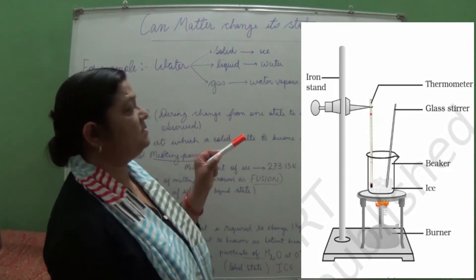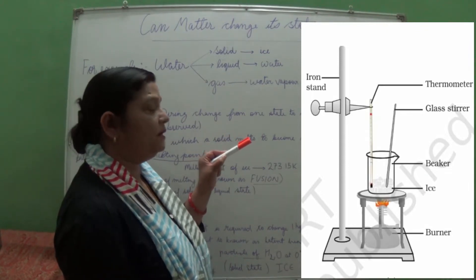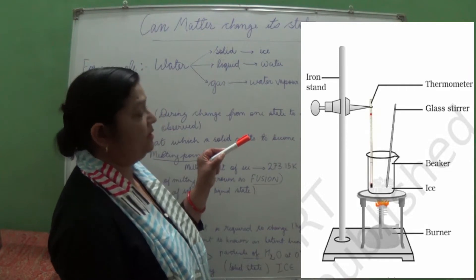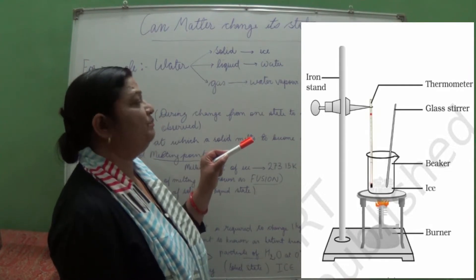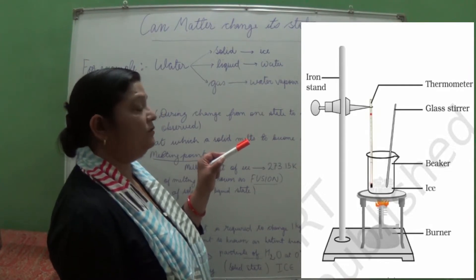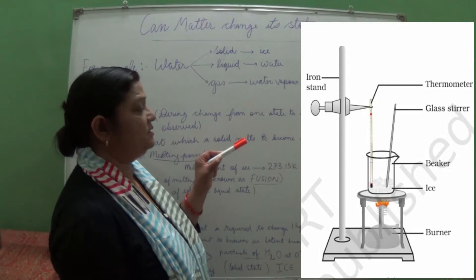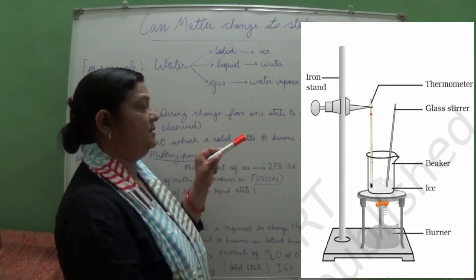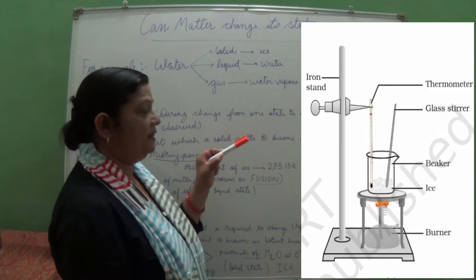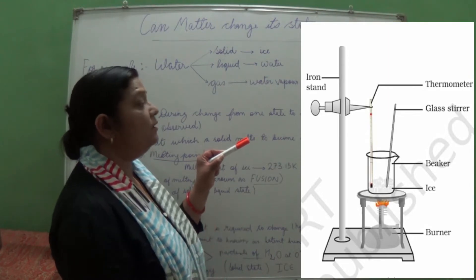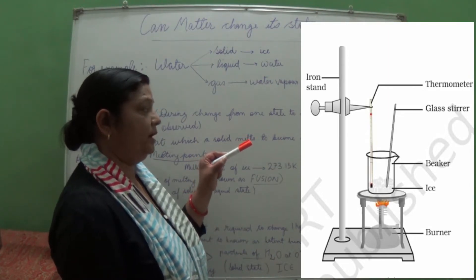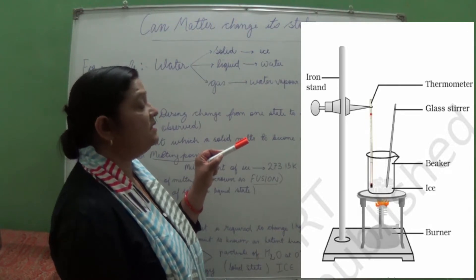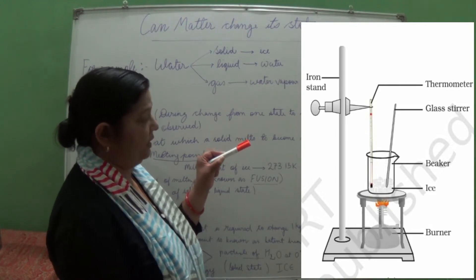The setup consists of a beaker, a Bunsen burner, a thermometer, and a glass stirrer. In this beaker we are taking ice, and then we are heating it with the help of the burner. The thermometer is there to monitor the temperature.